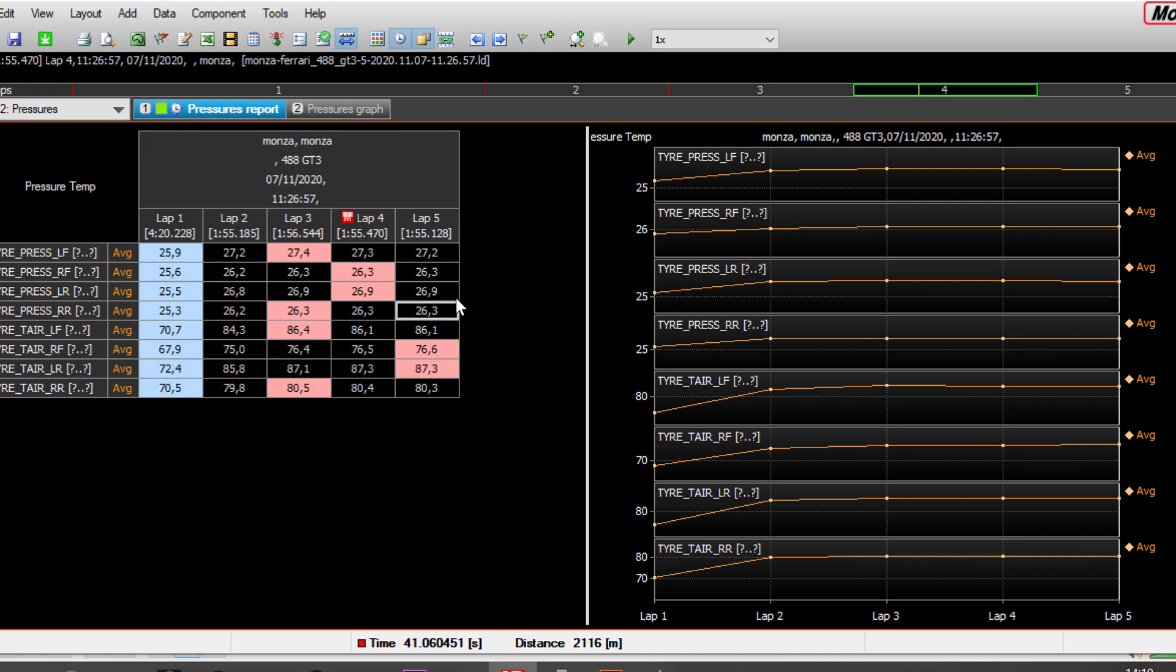But most of the time I like to run low pressures on the rear because it helps a lot on the slow corner exit. By the way, there is also a big gap between the front left and the front right. That could be a problem. But at Monza, we also have a lot of big right turns and not so many left turns, so it's quite normal.